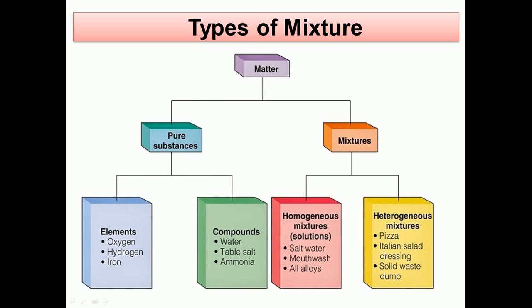You can see here the types of mixture. This is matter, and matter is divided into two: one is pure substance, the second one is mixture. Pure substance is divided into two: one is element, the second one is compound. Elements are oxygen, hydrogen, iron. Compounds are water, because water is the combination of hydrogen and oxygen. Two molecules of hydrogen and one atom of oxygen grouped together form water. Table salt, sodium chloride, and ammonia are compounds. Compounds are formed by the combination of two or more elements. For example, when hydrogen and oxygen are combined in different ratios, they form water, so water becomes a compound.